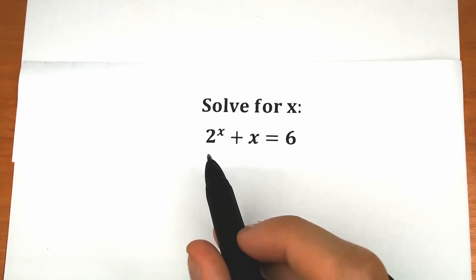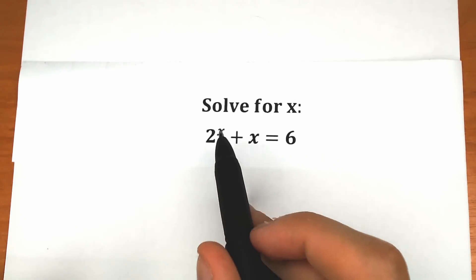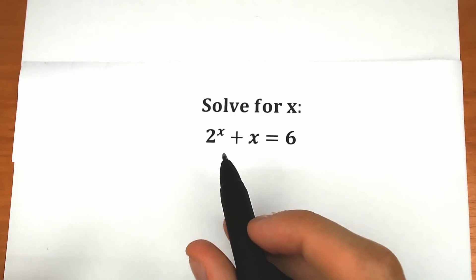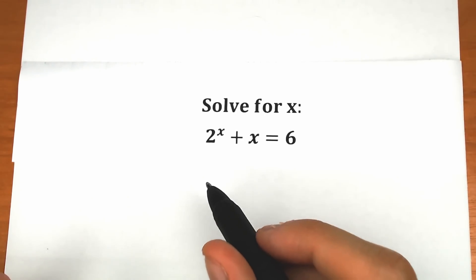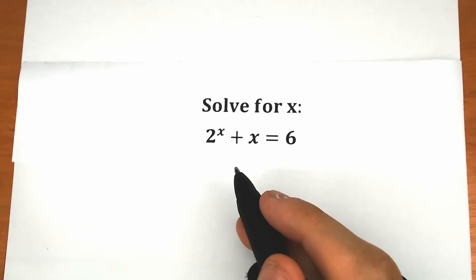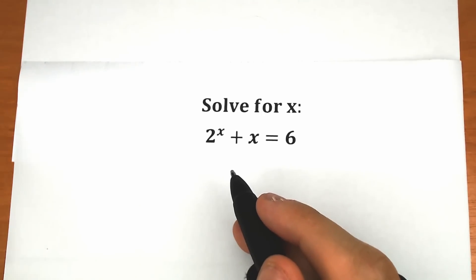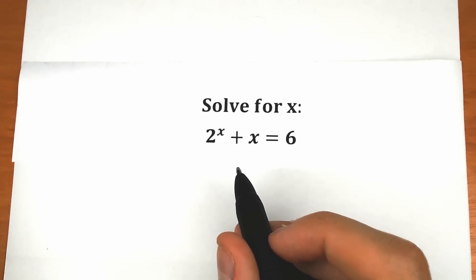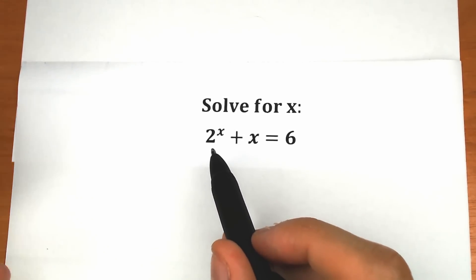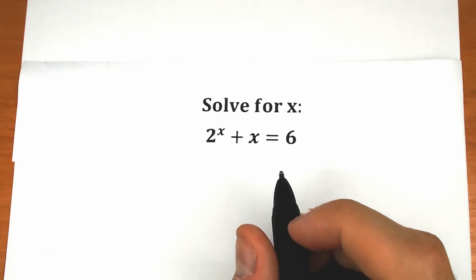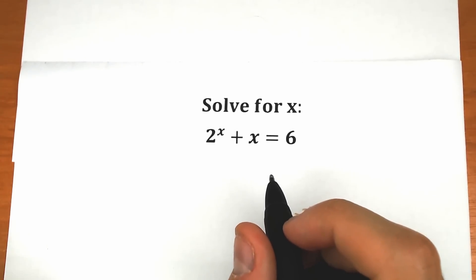A lot of students might be saying this is a very easy challenge — we have an exponential function, a linear function, a constant, so it's not that hard. We don't have square roots, sine, or cosine. We have very basic expressions: just 2 and 6. But in the same way this is a very tricky challenge. Maybe a lot of students can solve this by inspection — they can find x by inspection — but what about a proper solution? Let's look at how this solution works.